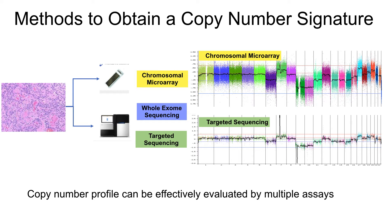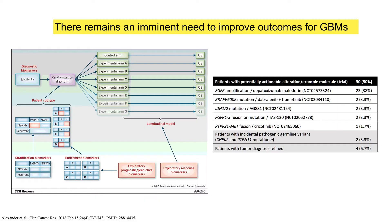It is not necessary to perform both chromosomal microarray and targeted sequencing in many instances. Most targeted sequencing panels available in many institutions are more than sufficient to detect low-level and focal events that are clinically relevant for many tumor types.